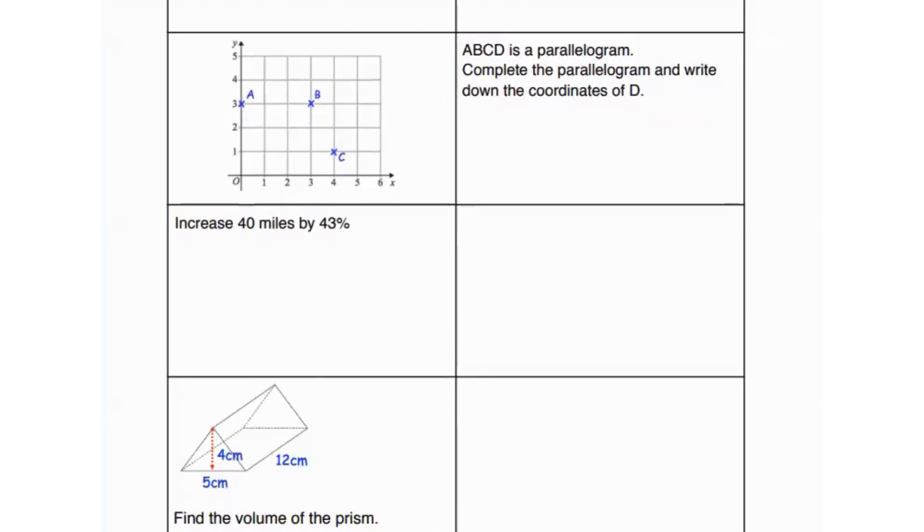And the next question says ABCD is a parallelogram. Complete the parallelogram and write down the coordinates of D. So the coordinates of D are going to come over here. Why? Because in a parallelogram, opposite lengths are parallel and they're equal. So since AB has a distance of three units, DC would also have a distance of three units. And D would lie on the left side of C, since it's a parallelogram.